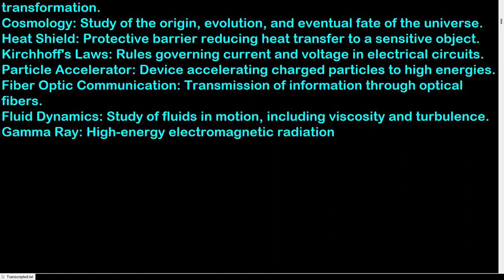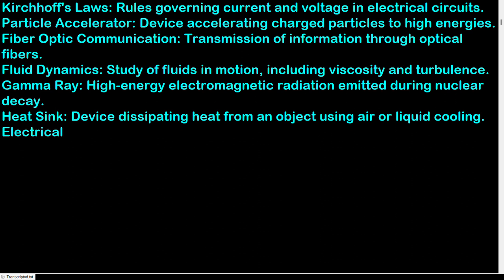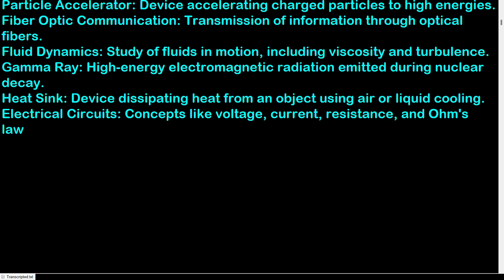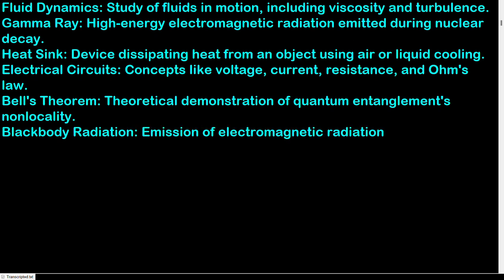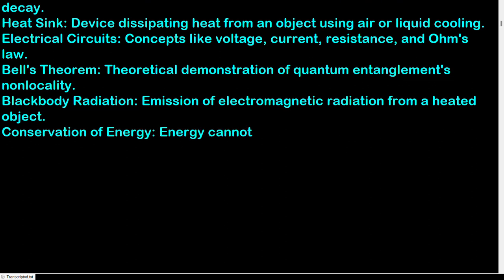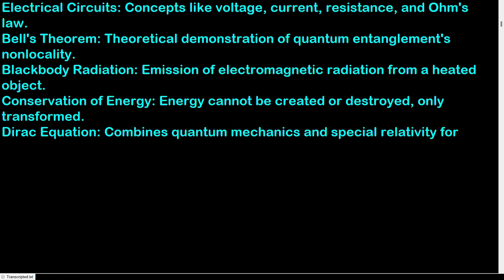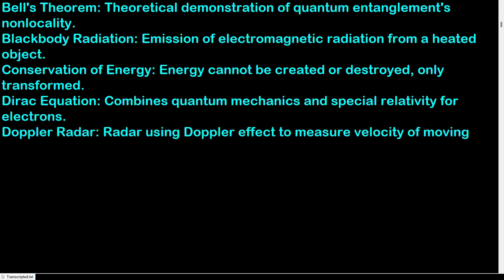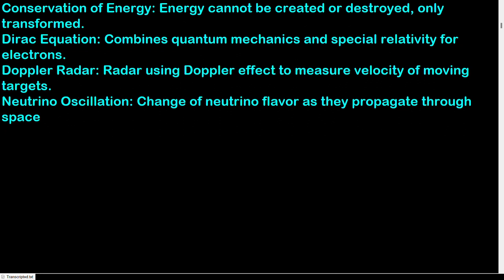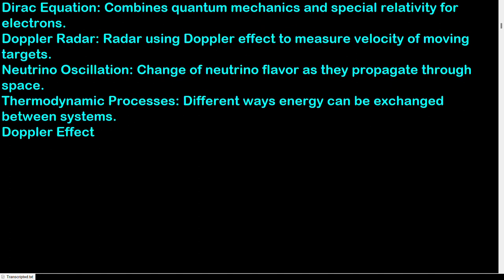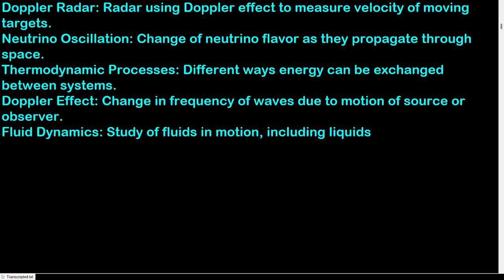Gamma ray: high energy electromagnetic radiation emitted during nuclear decay. Heat sink: device dissipating heat from an object using air or liquid cooling. Electrical circuits: concepts like voltage, current, resistance, and Ohm's law. Bell's theorem: theoretical demonstration of quantum entanglement's non-locality. Black body radiation: emission of electromagnetic radiation from a heated object. Conservation of energy: energy cannot be created or destroyed, only transformed. Dirac equation: combines quantum mechanics and special relativity for electrons. Doppler radar: radar using the Doppler effect to measure velocity of moving targets. Neutrino oscillation: change of neutrino flavor as they propagate through space. Thermodynamic processes: different ways energy can be exchanged between systems. Doppler effect: change in frequency of waves due to motion of source or observer.